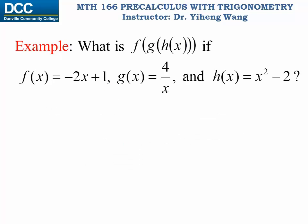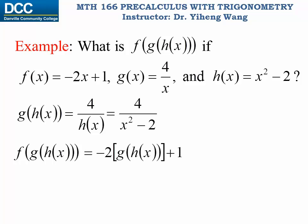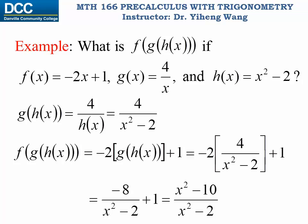Let's look at this example: what is f composed with g composed with h(x) if f, g, and h functions are all given? We need to start with g composed with h. Since g(x) is 4 over x, g composed with h is 4 over h(x). Since h(x) equals x squared minus 2, this becomes 4 over x squared minus 2. We take this output as the input for f, substituting x with g∘h, which is 4 over x squared minus 2. That equals negative 2 times (4 over x squared minus 2) plus 1, and simplifying gives x squared minus 10 over x squared minus 2, which is the answer.